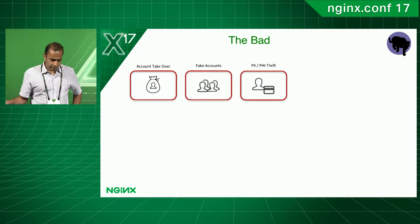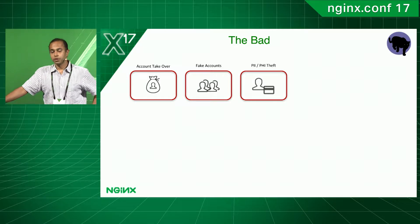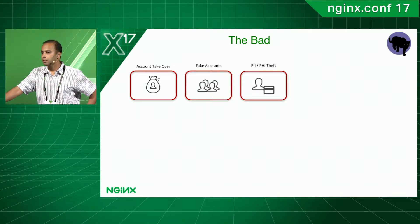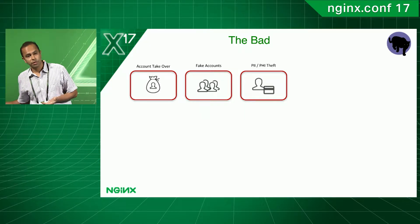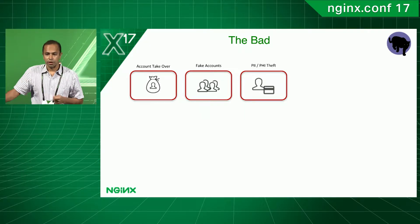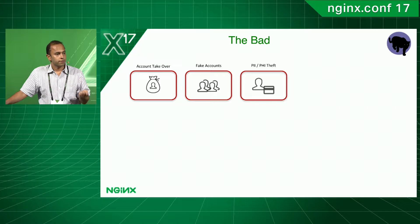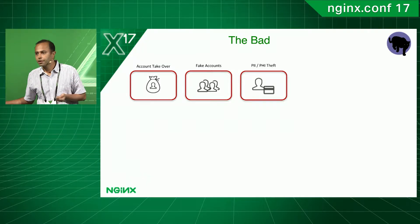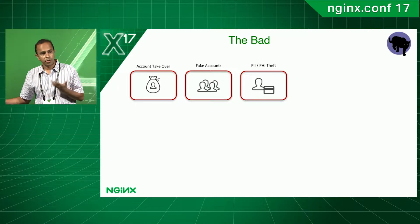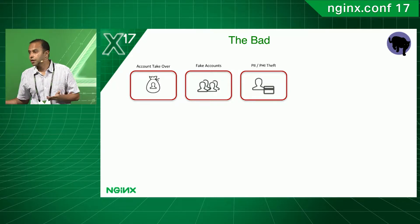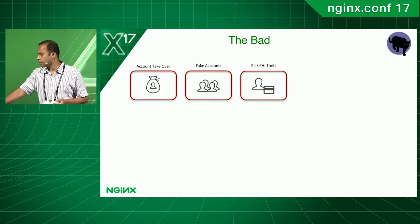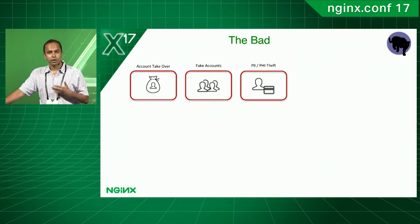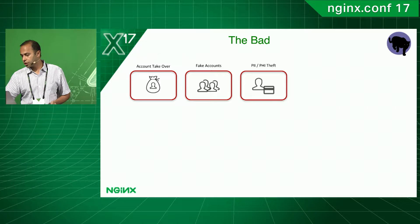PII and PHI theft is another type — scraping personally identifiable or healthcare information. If someone has gotten hold of verified credentials from the first phase, they log into those 500 accounts, scrape out all the information, and resell or reuse it in the black market.